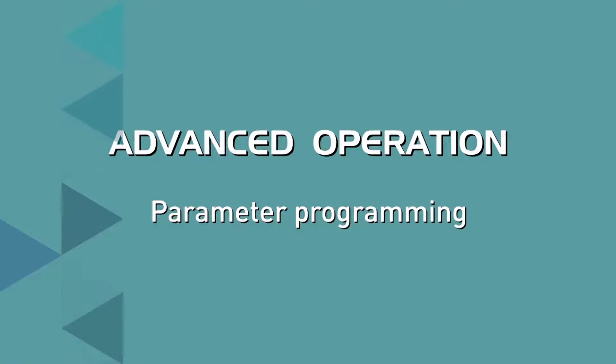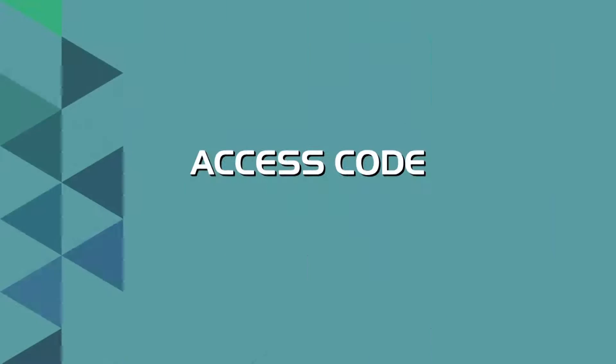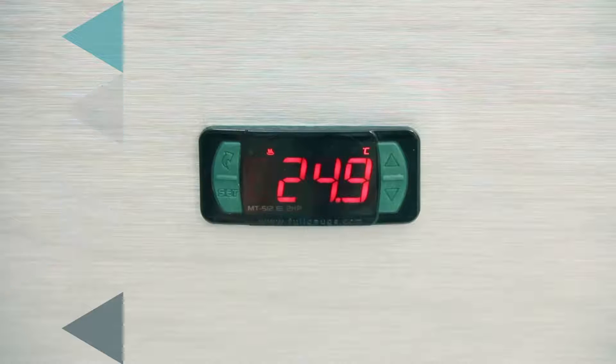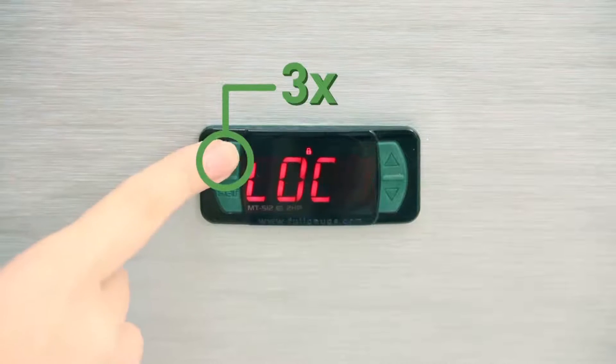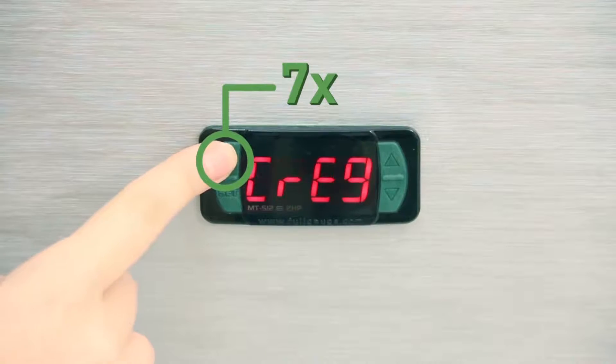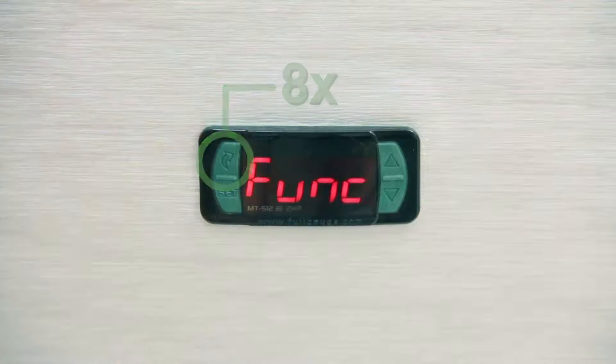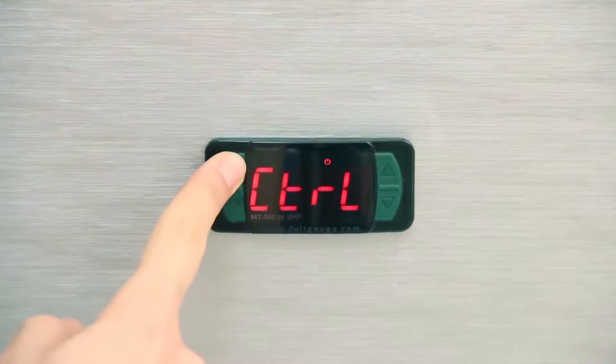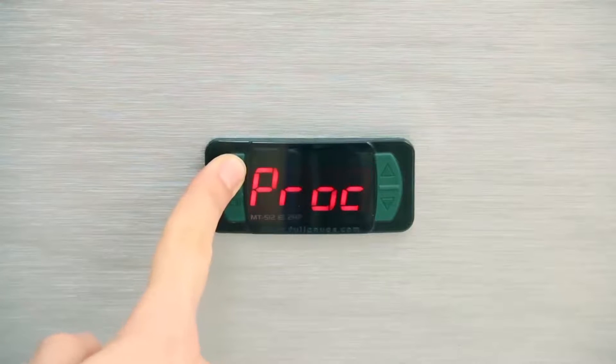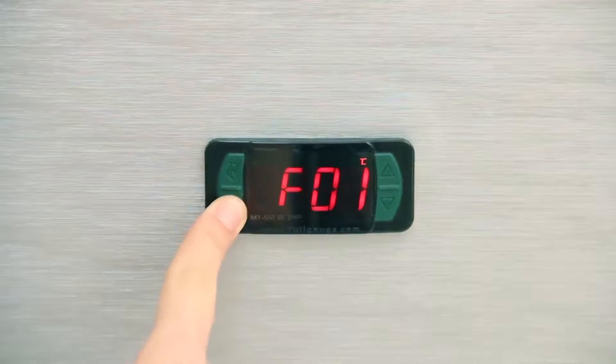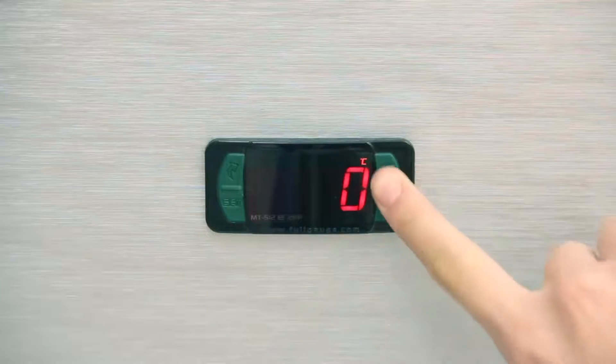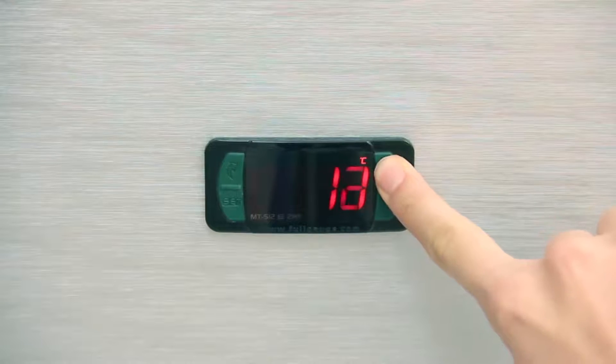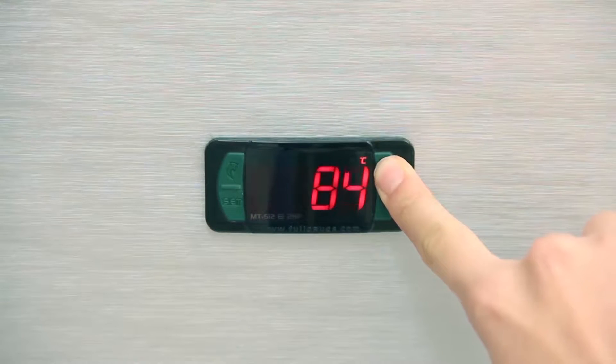Advanced operation. Programming the parameters. Access code. To change the other MT512E2HP functions, you must enter the access code in F01. This can be done in two ways. With FlatTech, press repeatedly until the FUNC message appears and press set. Access F01 and using the up and down keys, enter value 123.